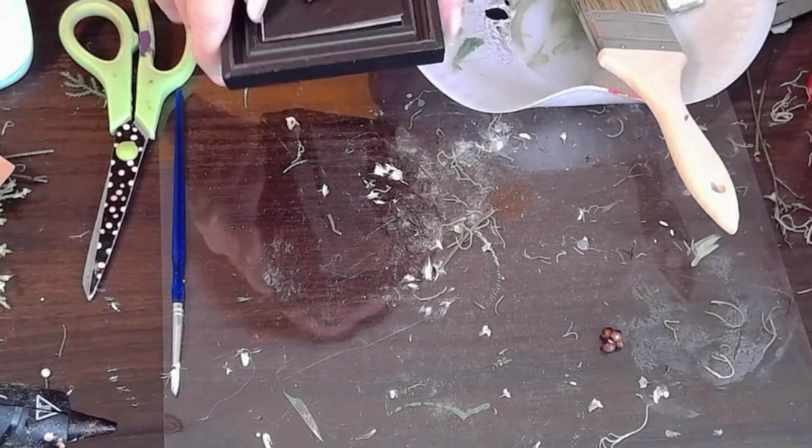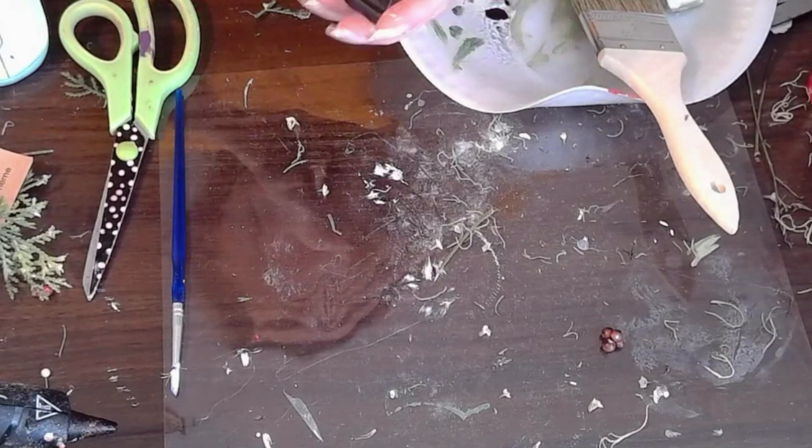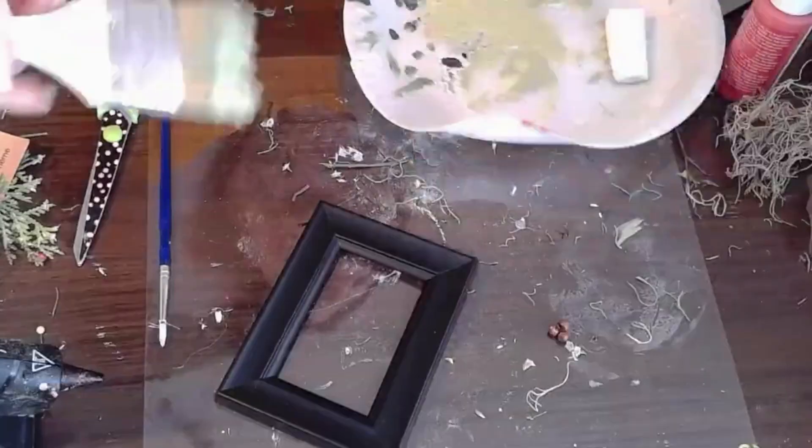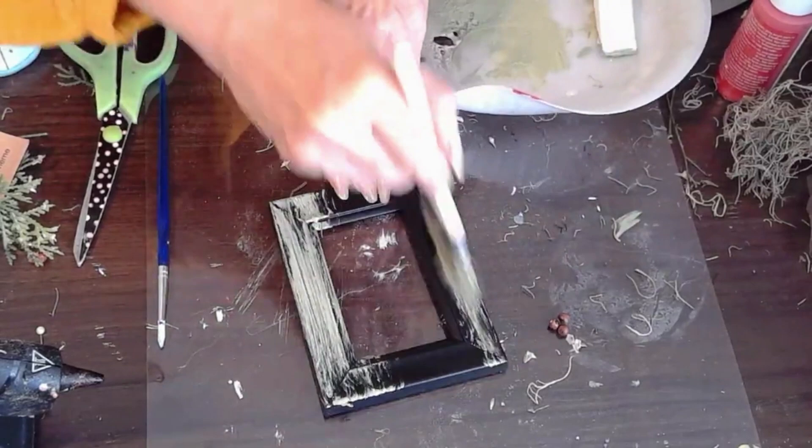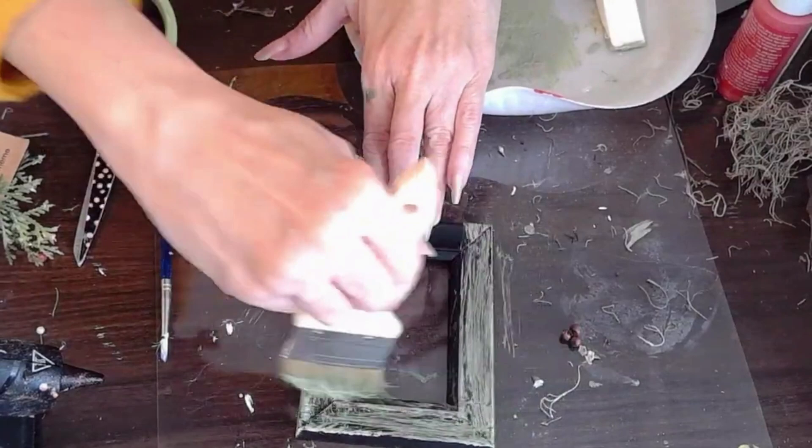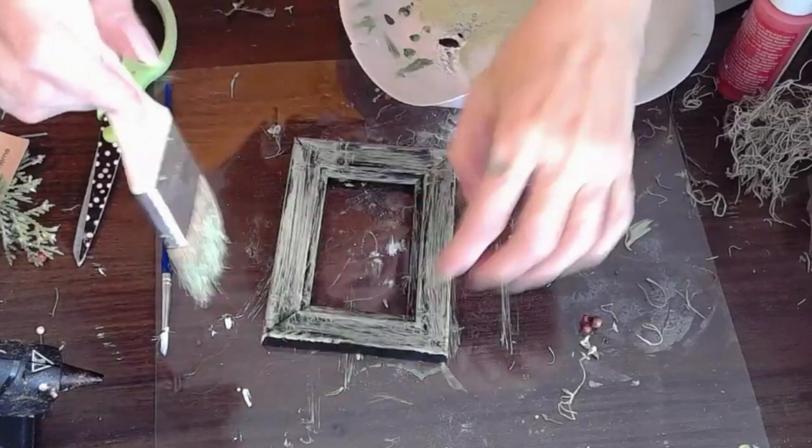Now I found these little frames at the Dollar Tree and usually they use these frames for weddings to put place cards and I'm just taking it apart and I'm just going to use it for our craft today. It's black and it's perfect because I wanted it to have the black background but they have it in gold and they have it in white. Once again painting it with that beautiful basil color.